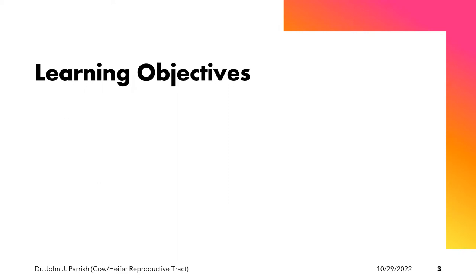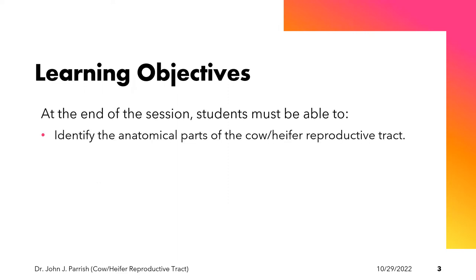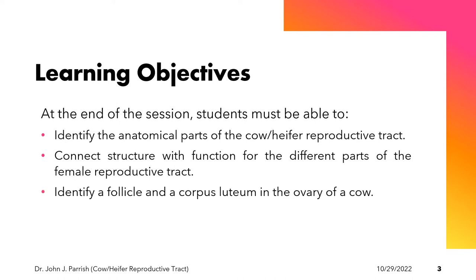At the end of the session, students must be able to identify the anatomical parts of the cow or heifer reproductive tract, connect structure with function for the different parts of the female reproductive tract, and identify a follicle and corpus luteum in the ovary of a cow.